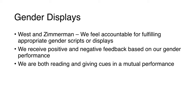There's an important set of scholars working back in the 1980s who were talking about how we display gender. West and Zimmerman argue that we feel accountable for fulfilling appropriate gender scripts or displays — we have a gender script in our mind about how things should go. For example, if you're going to go to prom, you have a gender script about wearing makeup, getting a dress, whether he brings a corsage. We're receiving positive and negative feedback from people based on our gender performance.